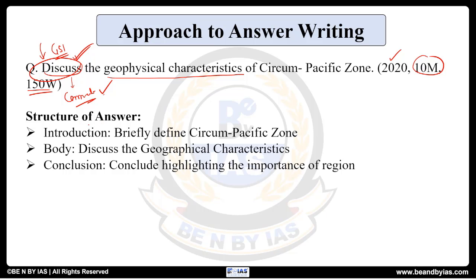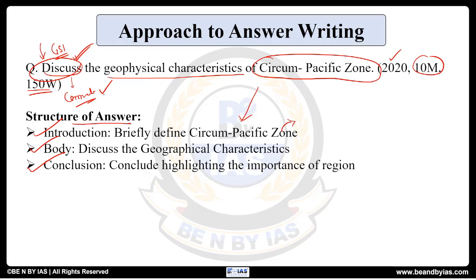Now we will go straight into the answer. To structure the answer, first your answer will have three parts: introduction, body, and conclusion. In the introduction, since the question is directly asking about the Circum-Pacific Zone, we can start with what the Circum-Pacific Zone is — briefly define it.